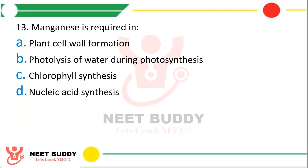Question 13. Manganese is required in: plant cell wall formation, photolysis of water during photosynthesis, chlorophyll synthesis, or nucleic acid synthesis? The correct answer is option B — photolysis of water during photosynthesis.